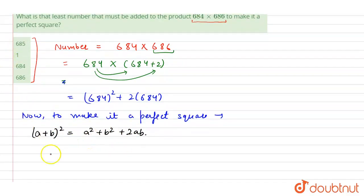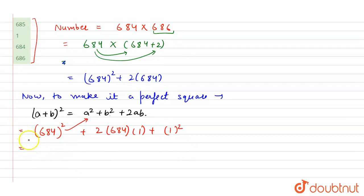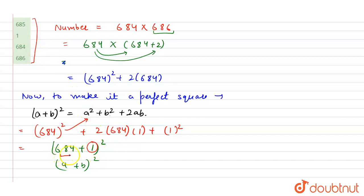Now proceeding further: 684 whole square — that means 684 will be 'a', plus 2 into a, that is 684, and taking 1 plus 1 squared as b. Now solving this, 684 plus 1 will be our answer, that is (a + b) whole square. So we added 1 to 684 to make it a perfect square. This will come out to be 685 whole square.